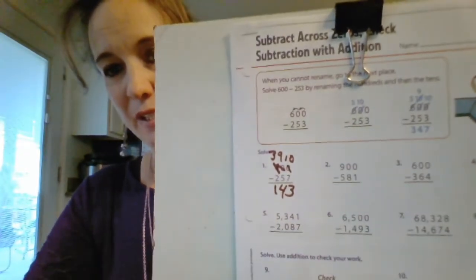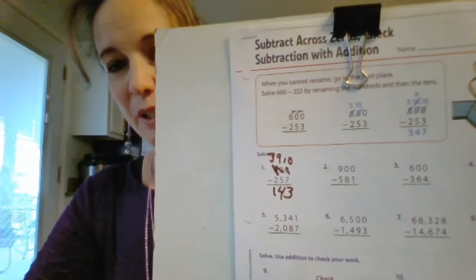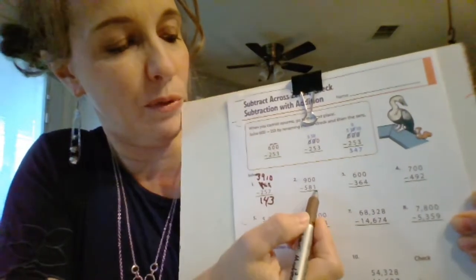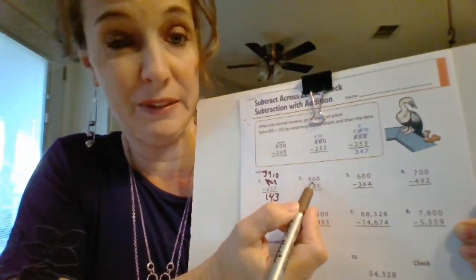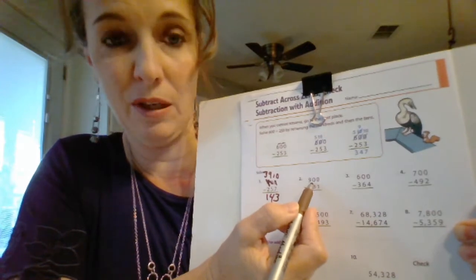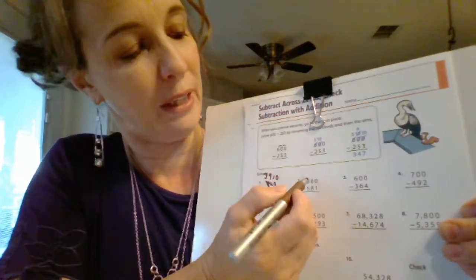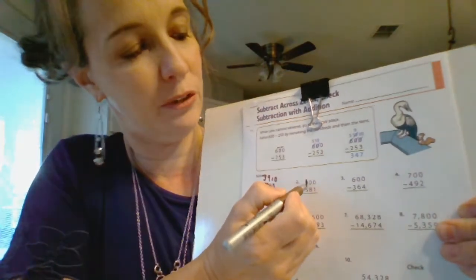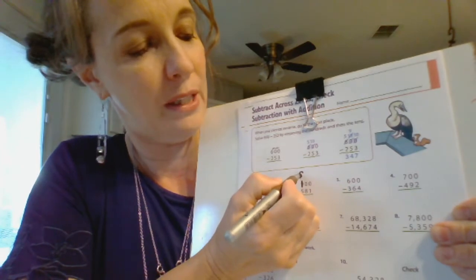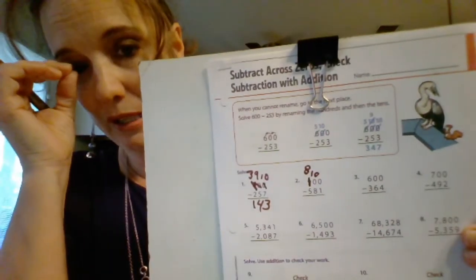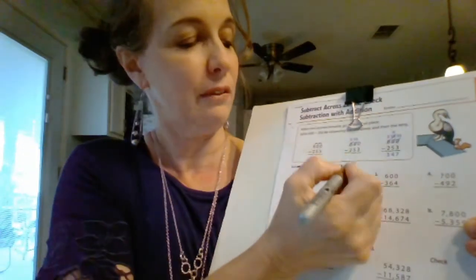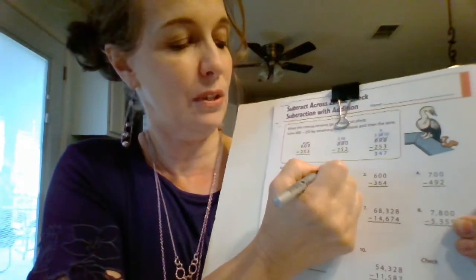Let's do it again. I have 900 minus 581. Can I take one away from zero? No, I cannot. Go to the group of tens and borrow. I can't. So I've got to go to my hundreds, make that eight hundred, make this ten groups of ten. Now I can borrow from it to fix my ones.